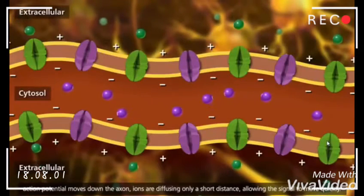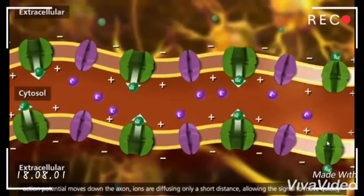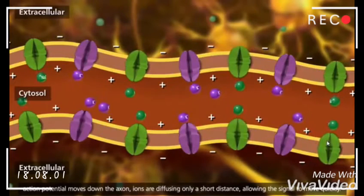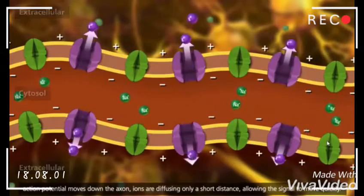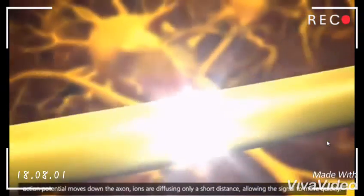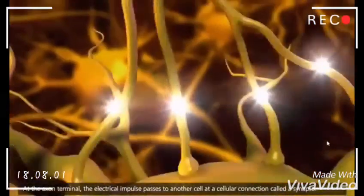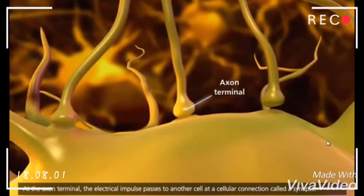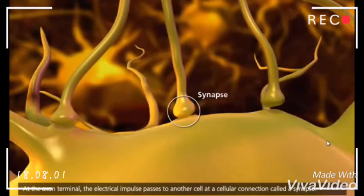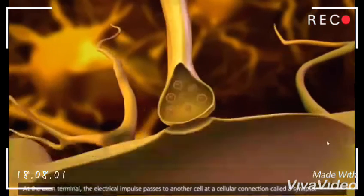As the action potential moves down the axon, ions are diffusing only a short distance, allowing the signal to move quickly. At the axon terminal, the electrical impulse passes to another cell at a cellular connection called a synapse.